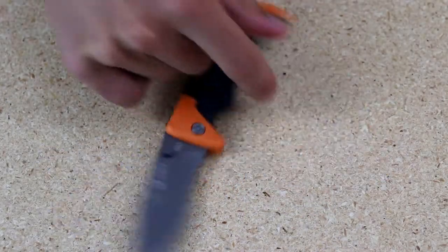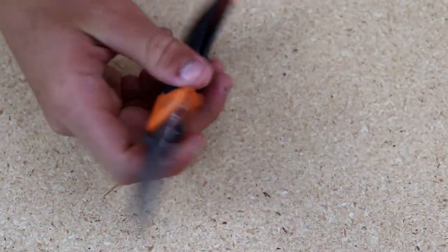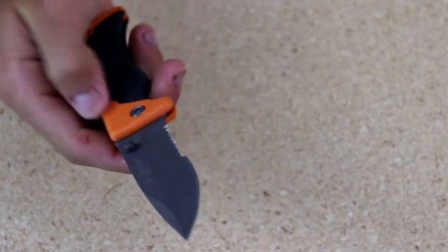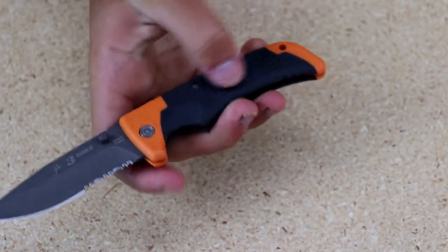Alright guys, as you can see this thing is extremely sharp. Let's go over some of the features. Got your thumb studs, stainless steel blade, kind of rubberized grip right here with a Three Oaks emblem right there. Got your lock back lock on there.